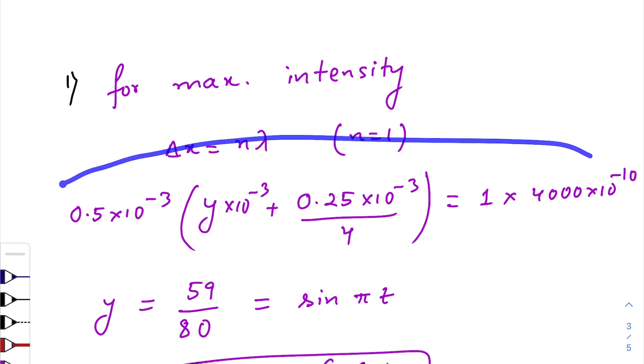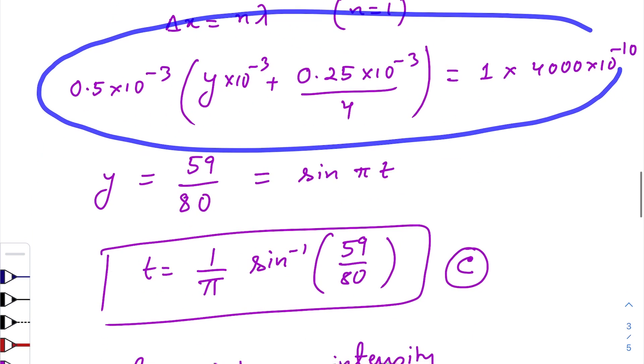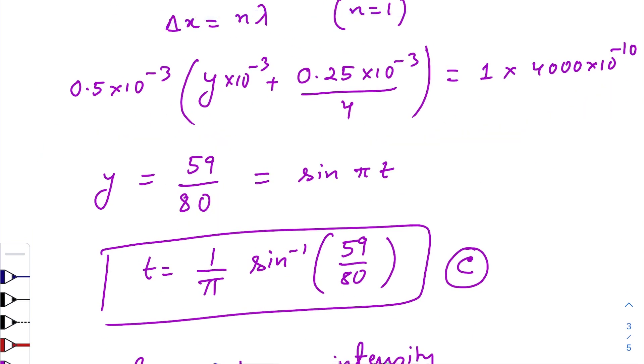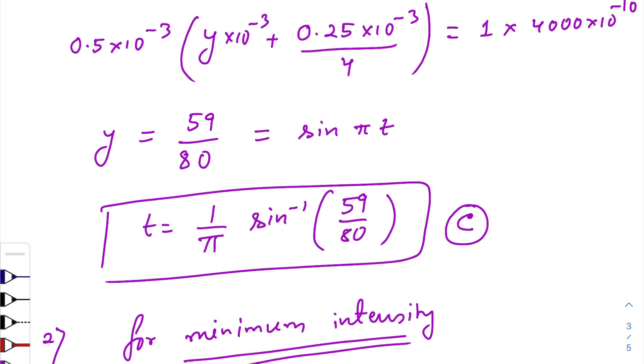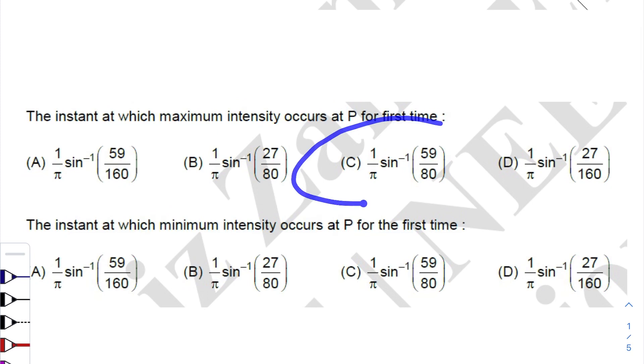So first for n equals to 1, we just do the calculation and we'll get 59 by 80 comparing it with sine phi t. So at t equals this time we'll get the maximum intensity for the first time. Now let us check with our options. So option c is correct.